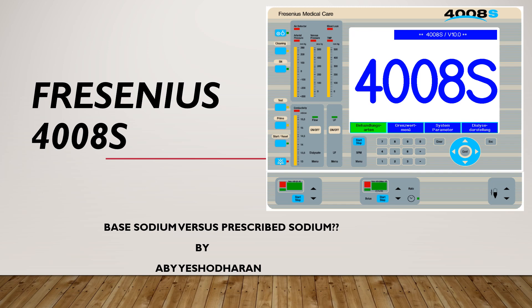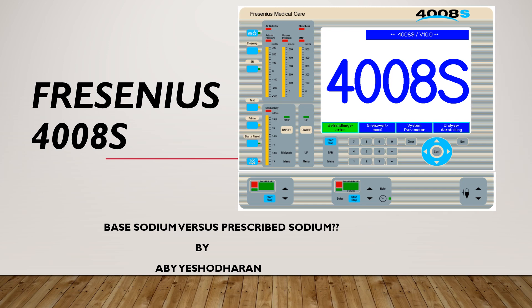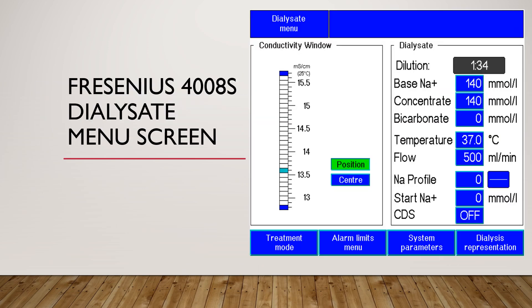Base sodium is the total sodium concentration present in both acid concentrate and bicarbonate concentrate after mixing by the 4008S machine. If you look at the screen in the video, you can see a base sodium of 140 millimole per liter, and just below that it is displayed as 'concentrate.' However, on machines sold in India, instead of 'concentrate,' it will be written as 'prescribed sodium.'